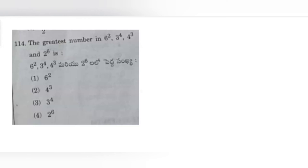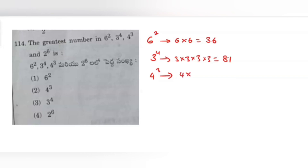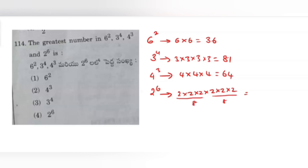Coming to the last question 114: the greatest number among 6 squared, 3 power 4, 4 power 3, and 2 power 6 is? Computing: 6 squared equals 36; 3 power 4 equals 81; 4 power 3 equals 64; 2 power 6 equals 64. The greatest among these is 81. So 3 power 4 is the highest. Option 3 is correct. Thank you.